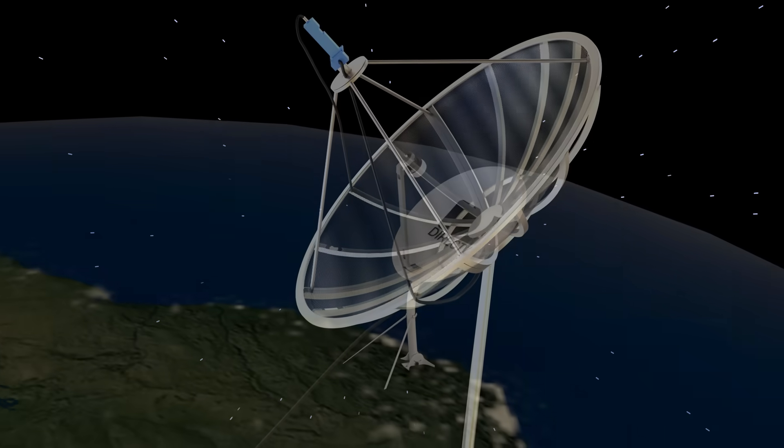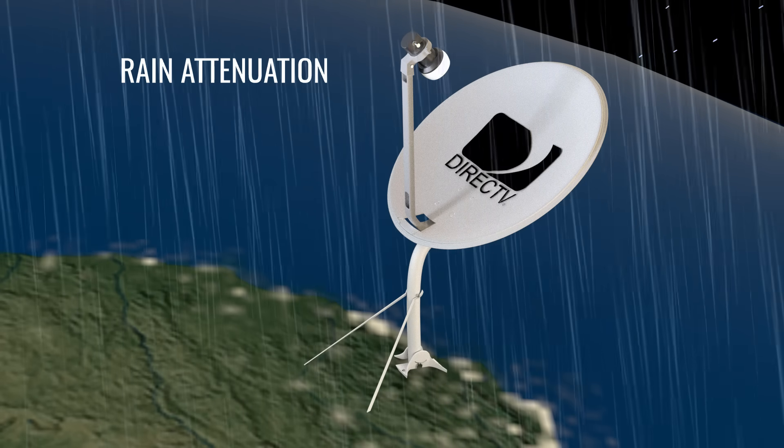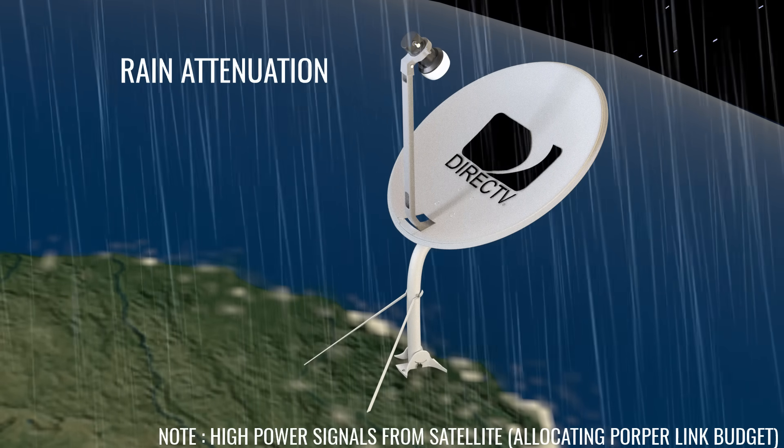However, KU band signals are affected by rain, so scientists have had to overcome this issue with improvements in satellite technology.